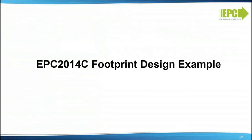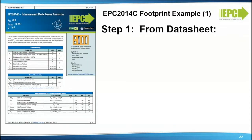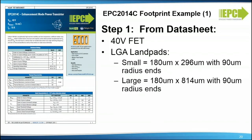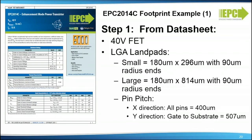EPC 2014-C footprint design example. Step 1 from the datasheet: we have a 40-volt FET, which defines the spacing. We have LGA land pads — the small one is 180 by 296 micrometers with 90-micrometer radius ends; the large is 180 by 814 micrometers with 90-micrometer ends. Pin pitch is shown in the datasheet: in the x-direction all pins are 400 micrometers; in the y-direction we only have the gate and substrate pins at 507 micrometers.